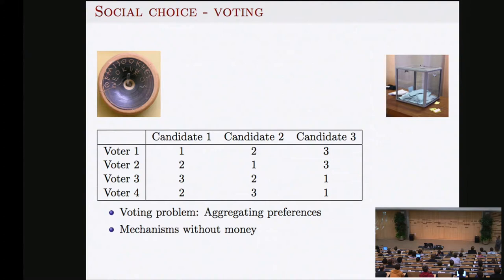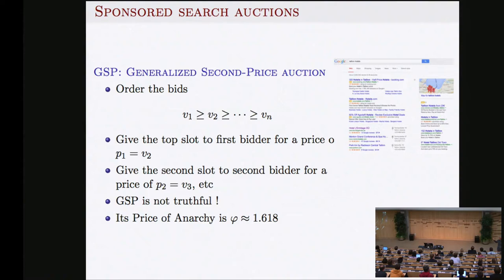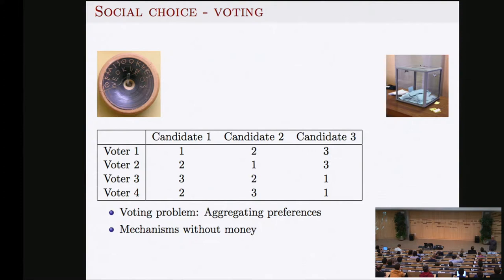These are mechanisms with money. The auctioneer here is Google. Why doesn't Google switch to a truthful mechanism? They say it's good for society. Whether we believe them or not, they claim to try to do good.